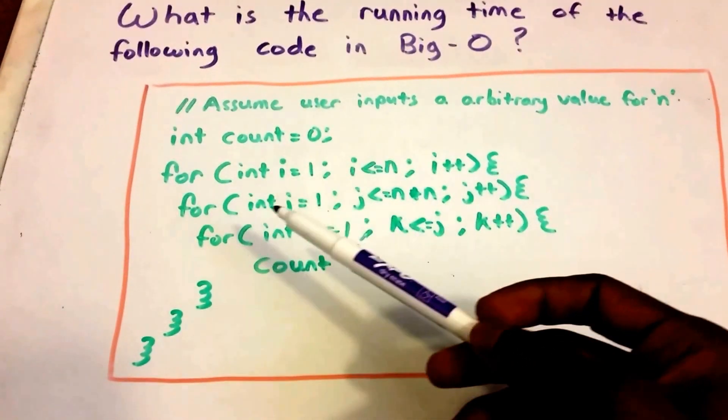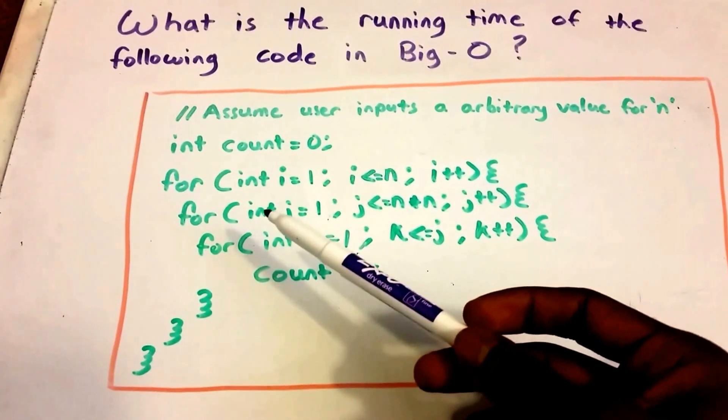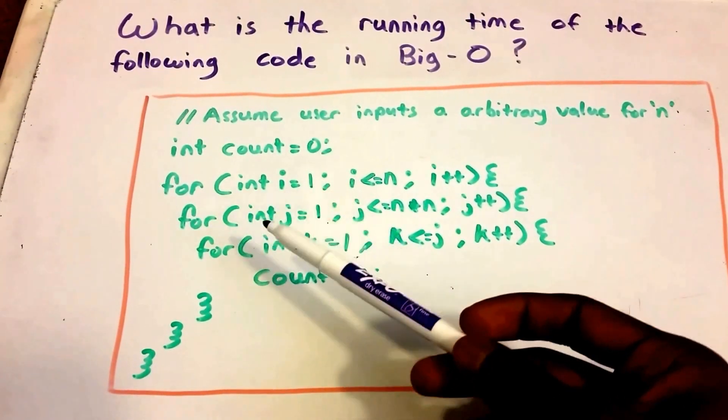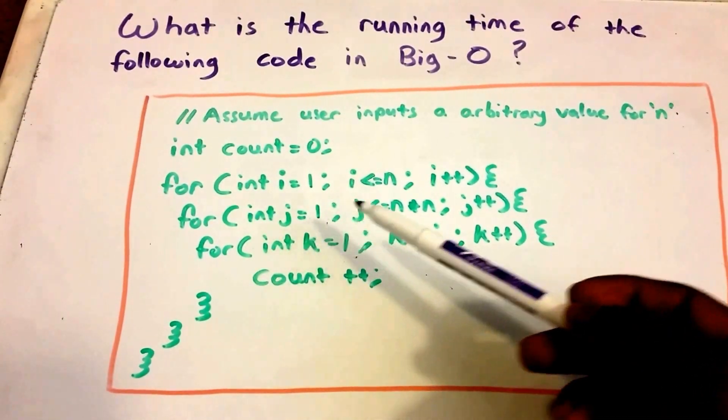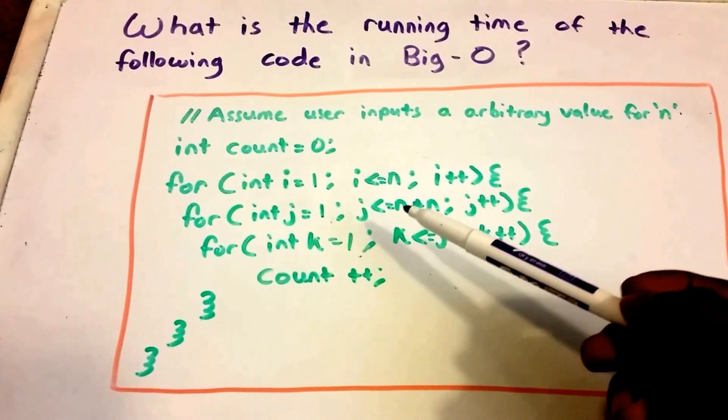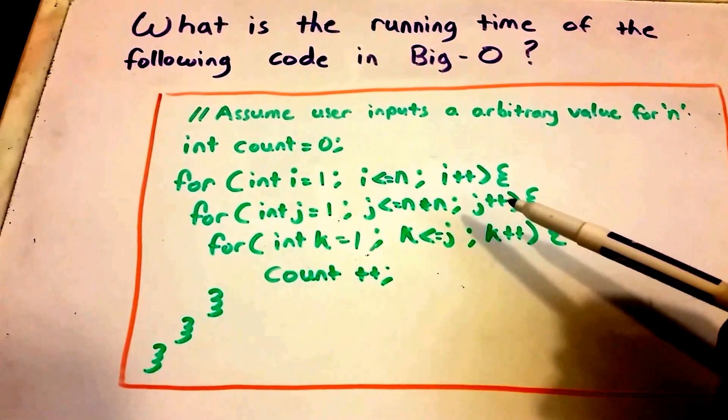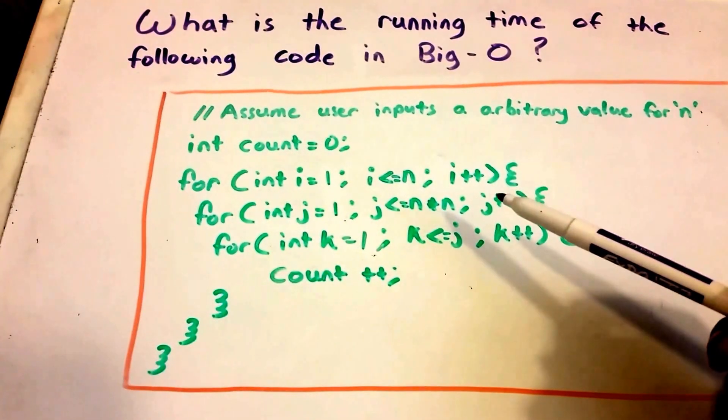Then we have an inner for loop, the second for loop within the outer loop. It runs from j equals 1 and it's going to run while j is less than or equal to n times n, and then j increments by 1 each time.